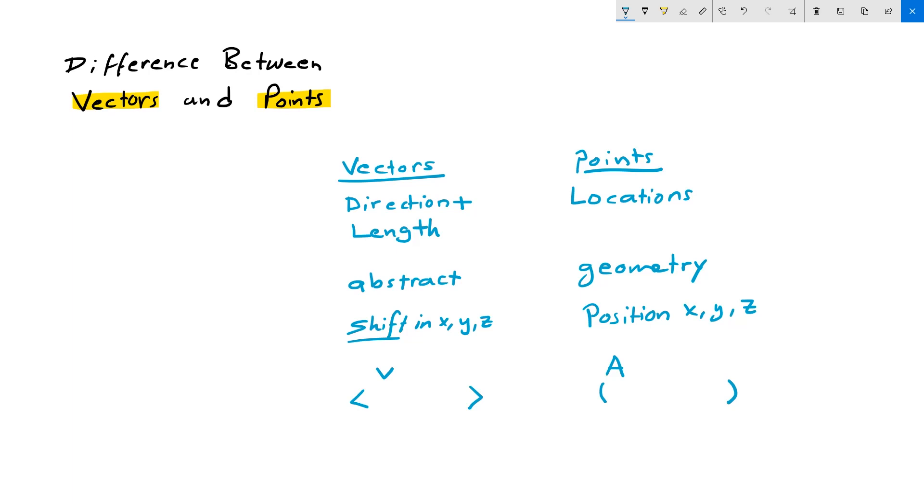But remember, the three of them, vectors and points, they both have three components. And this is one of the reasons that they are confused with each other. But they are two very different concepts.